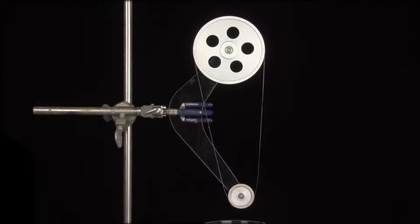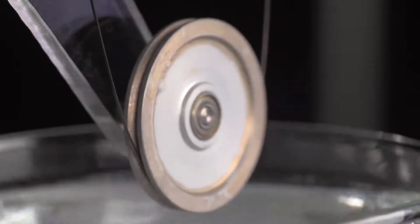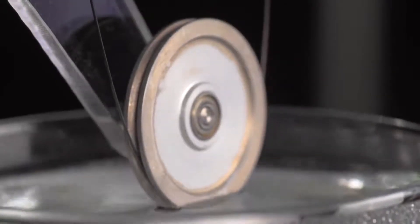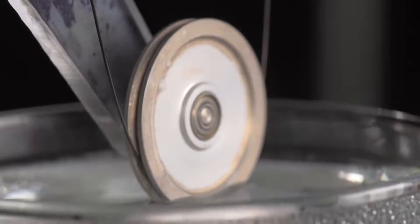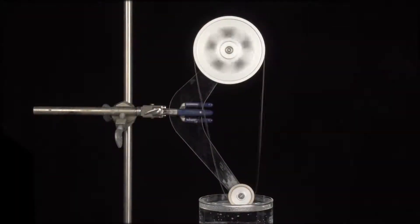To make it run, I just contact the lower edge of the small bottom wheel with water, which I've heated again to 75 degrees Celsius, then spin the top wheel a bit, and the device then runs on its own.